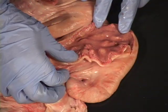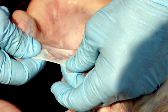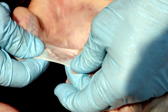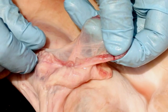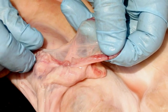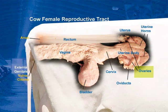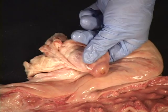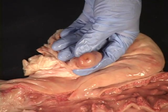Uterine horns: each one is approximately 8 to 16 inches in length and they are connected to their respective oviducts. The oviducts are tubes that connect the ovaries with the uterine horns and provide the site of fertilization between the ovum and the sperm.